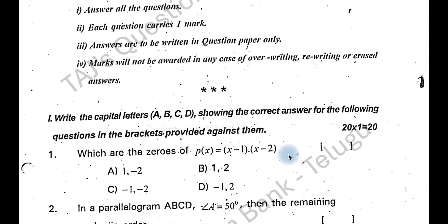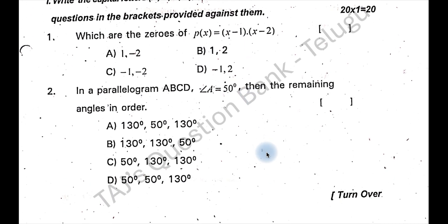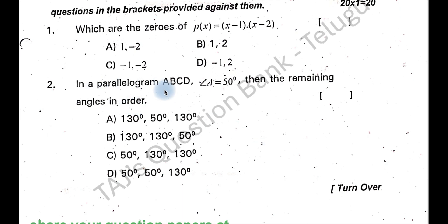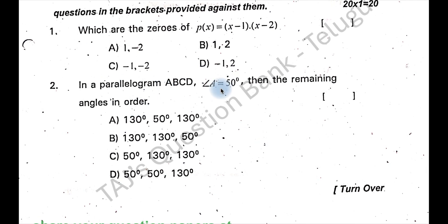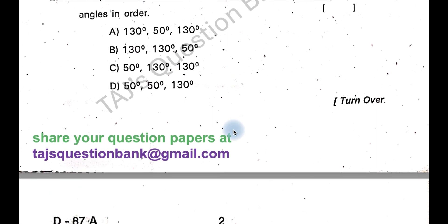This is part B. x is equal to 1 and x is equal to 2, that will be the zeros, which is option B is right. It is a parallelogram so what will be the other angles? 130, 50, and 130. This is the correct answer, option A.